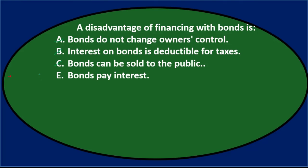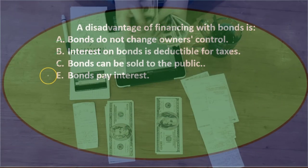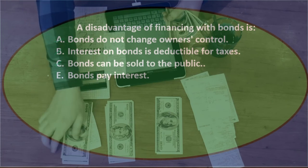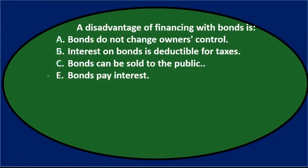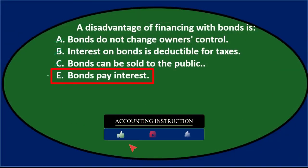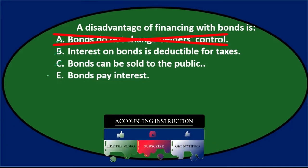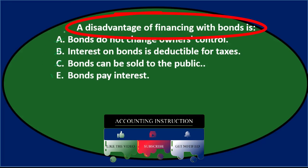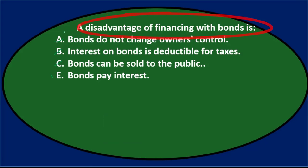That leaves option E: bonds pay interest — and that is a disadvantage. Notice that E is linked to B: yes, we get to deduct the interest we pay, which is nice, but we still don't like having to pay it. Compare this to financing through stock, where there's no required interest payment, though you do give up some ownership to stockholders. So the answer is E — bonds pay interest.